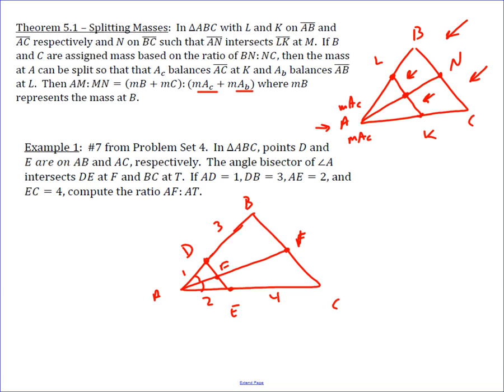BF and FC have to have the same ratio as the ratio of the two sides. And so that means this is 4 and this is 6. So how do we split masses? Well,